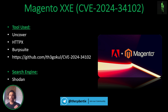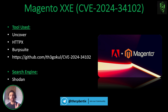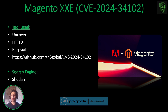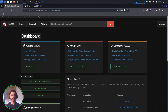The tools we are going to use are: Uncover to get all affected domains from Shodan, httpx to filter and verify live websites, Burp Suite to get a Burp Collaborator client, and a GitHub tool for CVE-2024-34102 which detects whether a particular domain is affected by this Magento XXE vulnerability. The search engine we'll use is Shodan.